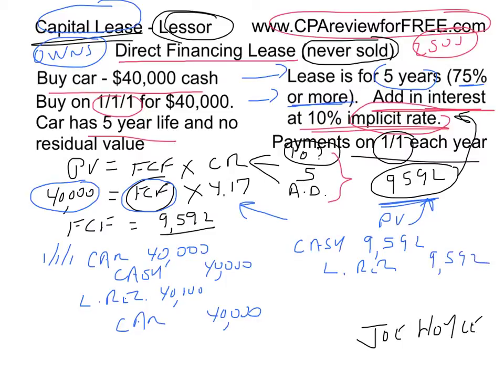It's always important in a lease or bond problem to track the principle. The lease receivable started at $40,000; the first payment was $9,592. Therefore your lease receivable as you begin Year 1 is $30,408.